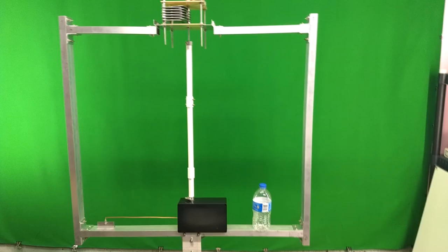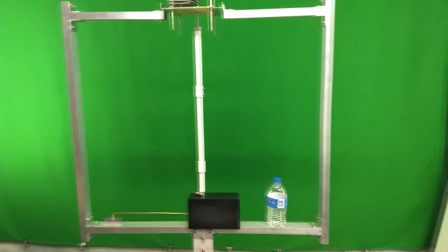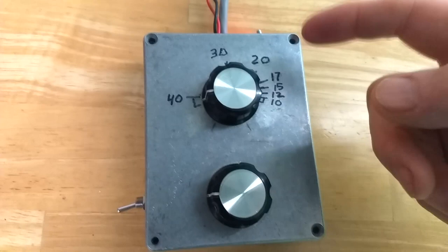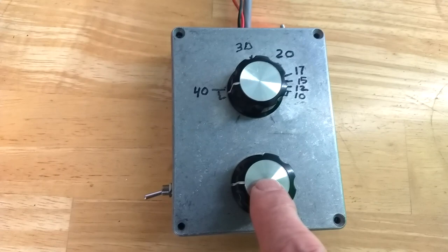By the way, this covers 10 meters through 40 meters. And let me show you the controller for it. Here's the controller. The top knob is a coarse adjustment or band select, and the bottom knob is a fine-tune adjustment.